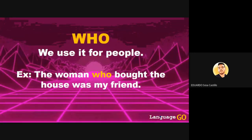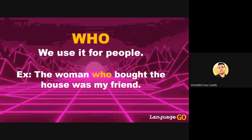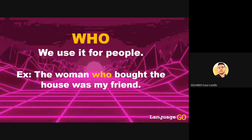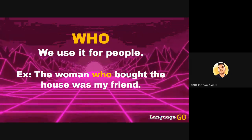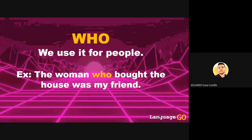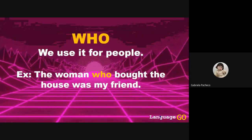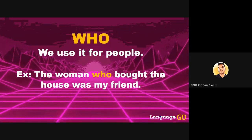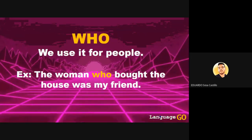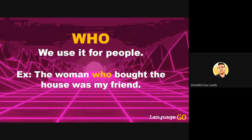We use 'who' when we are talking about people — a man, a woman, a girl, a boy, a baby, anything about people. Look at the example: 'The woman who bought the house was my friend.' I am giving information about a woman — what happened is that she bought the house that belonged to my friend.